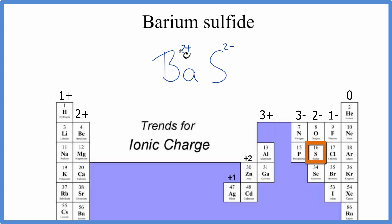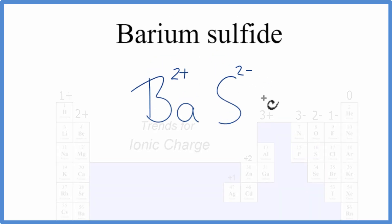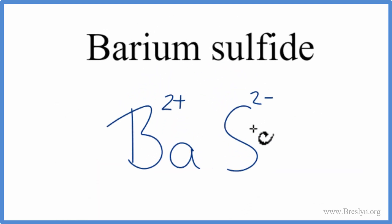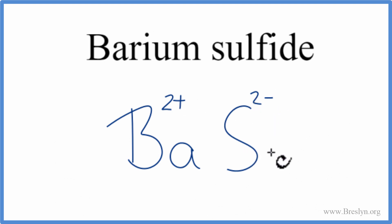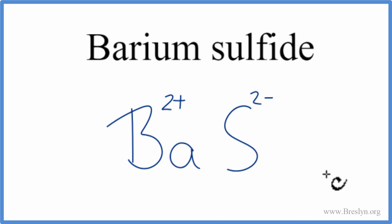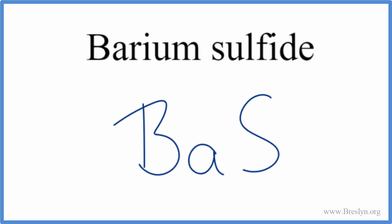These charges need to add up to 0 for the compound to be neutral — the net charge needs to be 0. In this case, we have 2 plus and 2 minus. Add them together, you get 0. So BaS is the formula for barium sulfide. Let's get rid of the charges to clean it up. The formula for barium sulfide is BaS.